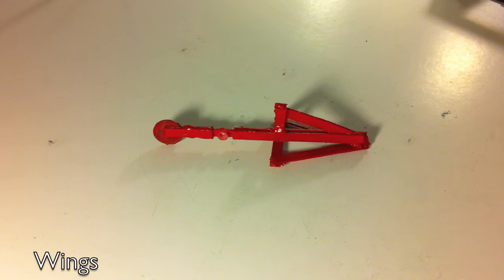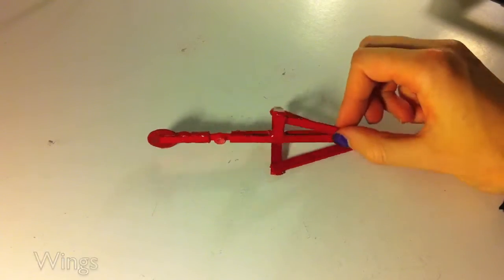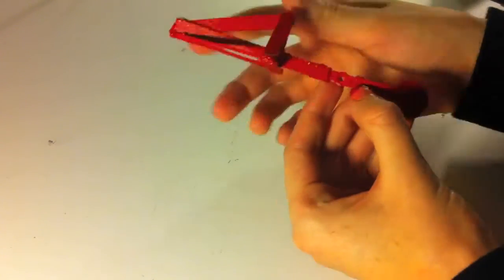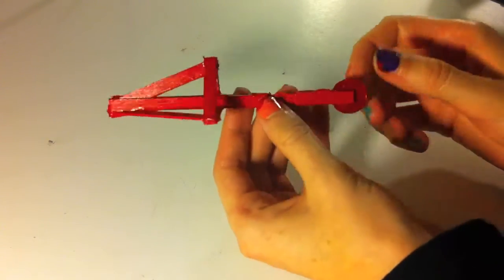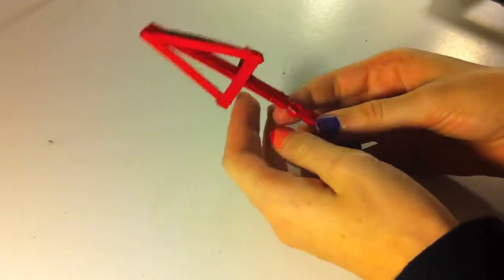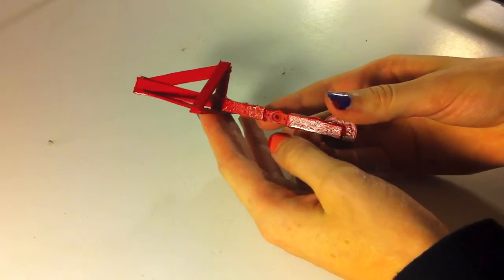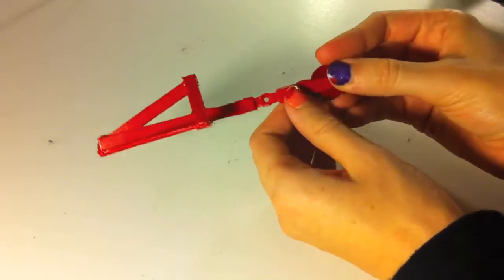So here's the completed wing construction for the RoboBird. As you can see, we have the servo horn on here, and also the counterbalance.